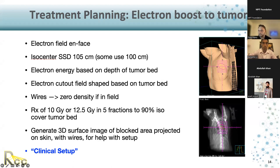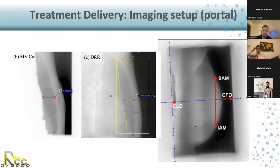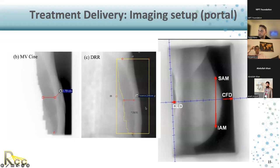This is a good segue to the treatment part. For patient setup, we typically use portal or MV imaging. Here I'm showing an MV image on the left and the corresponding DRR on the right. We check the separation of the chest wall from our MLC point, and also check that the superior and inferior borders match what we have in treatment planning. We can also check that the flash is adequate. You can quantify these and record certain values for a more quantitative patient setup. We do this type of imaging daily.